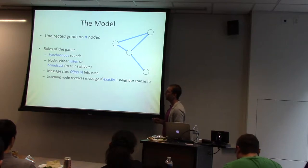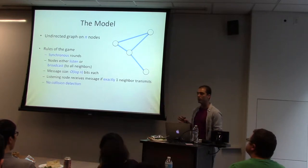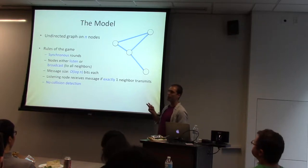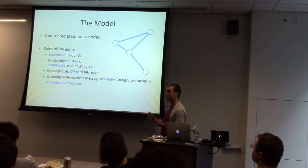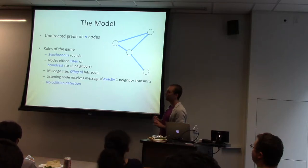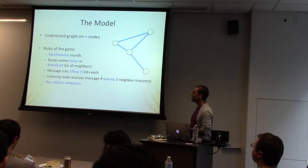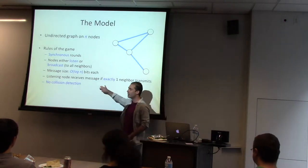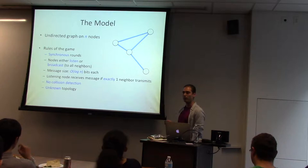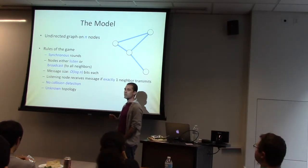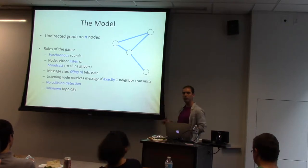Listening nodes receive the message if exactly one of their neighbors transmits to it. We have no collision detection — you cannot distinguish between two guys or seven guys transmitting to you and just background noise. And finally, we don't know the topology ahead of time. This relates back to the message size issue: we don't want a message where we can somehow find out the whole topology and transmit that accordingly.